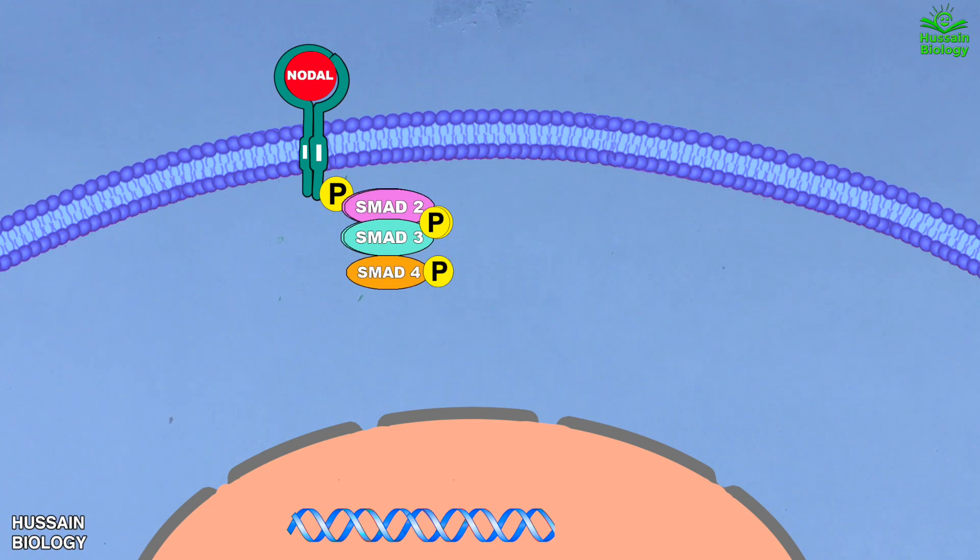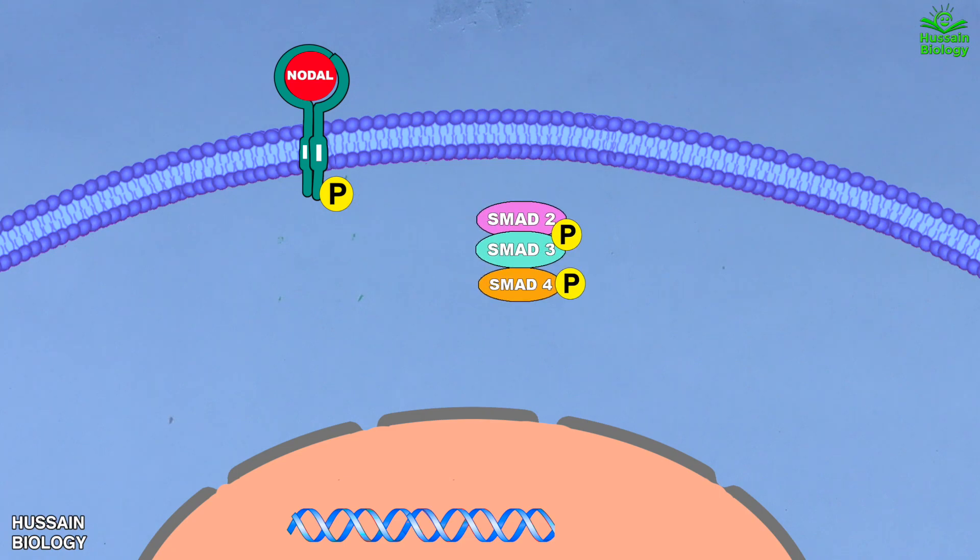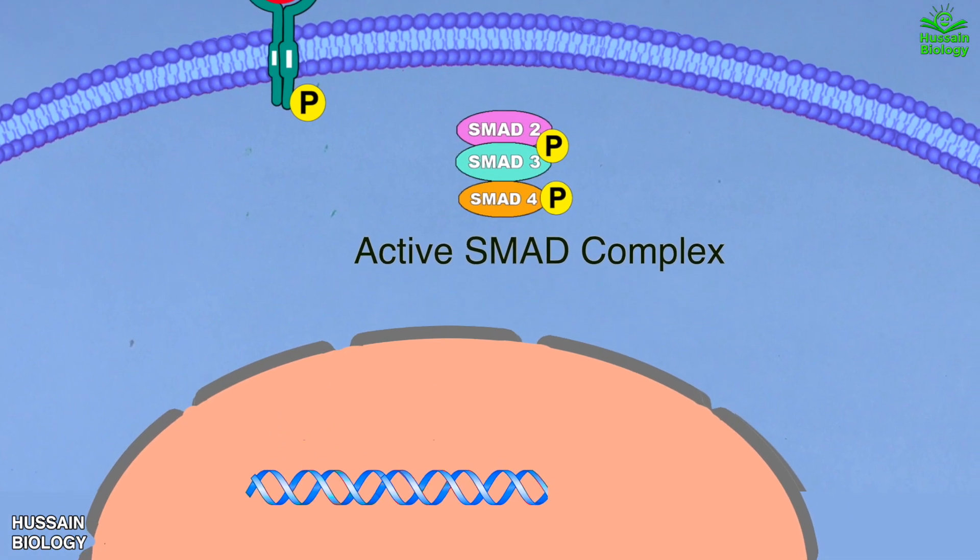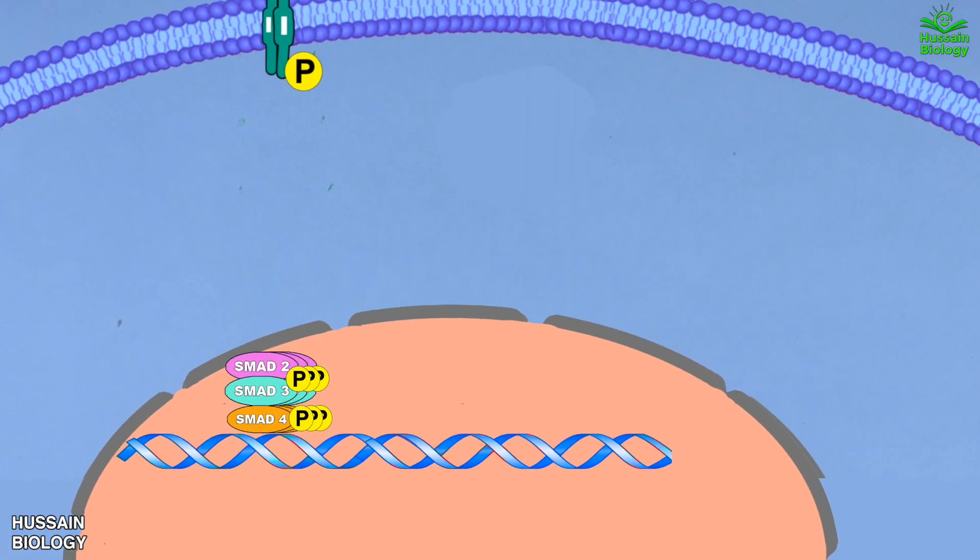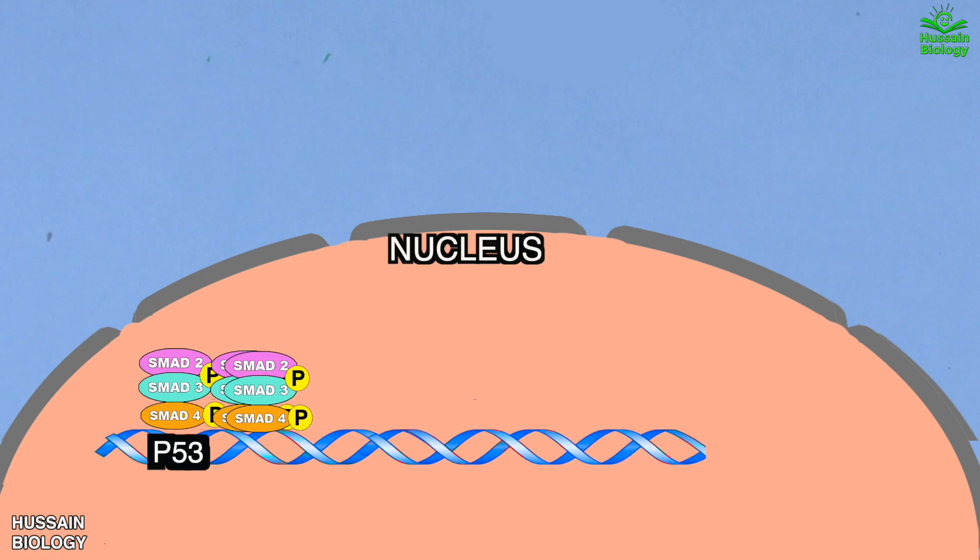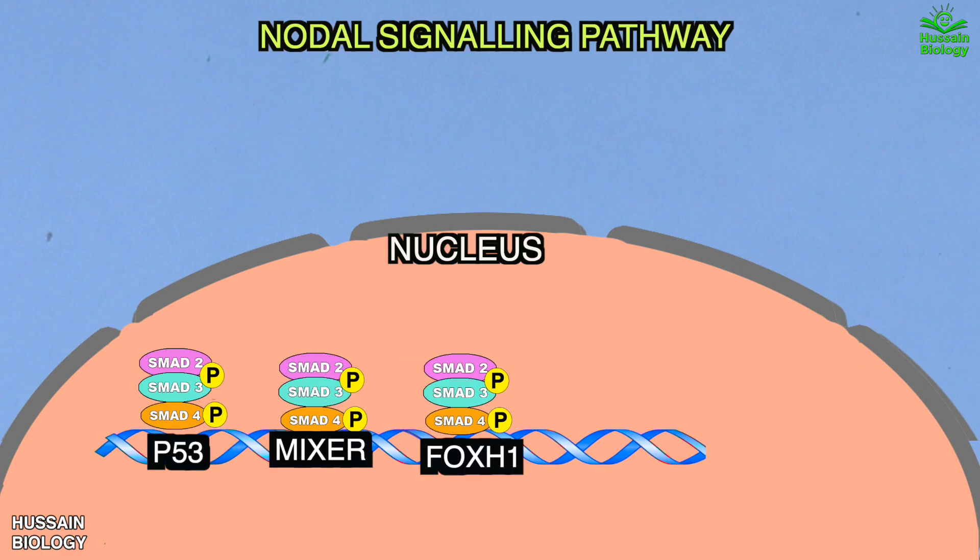and gets activated. Ultimately, we get the SMAD2/3 and SMAD4 complex, which is the phosphorylated and active form. This complex enters the nucleus where it combines with P53, Mixer, and FOXH1 transcription factors as shown in the diagram. Upon binding with these transcription factors, it drives the transcription of genes involved in mesoendoderm induction,